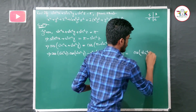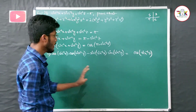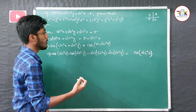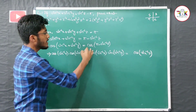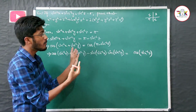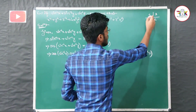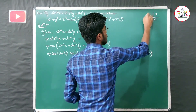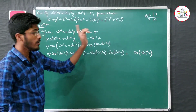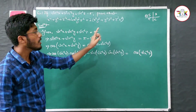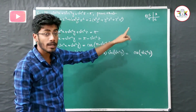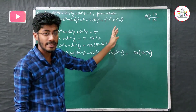Since π - sin⁻¹(z) is in the second quadrant, cosine is negative there. So the right side becomes -cos(sin⁻¹(z)). We use the identity that sin⁻¹(x) can be converted: cos(sin⁻¹(x)) = √(1-x²).